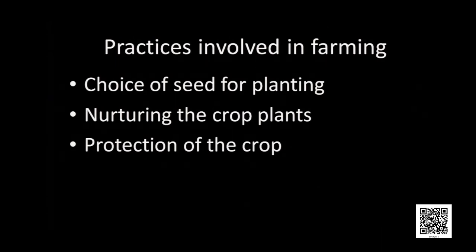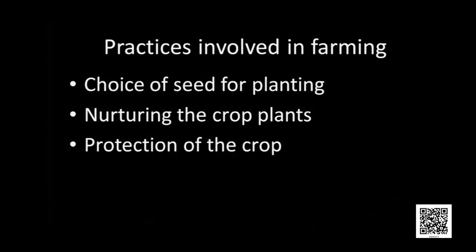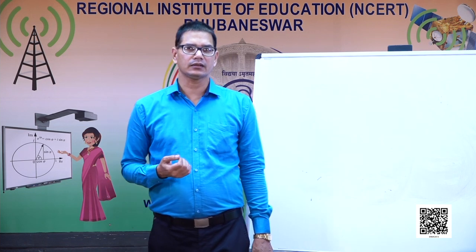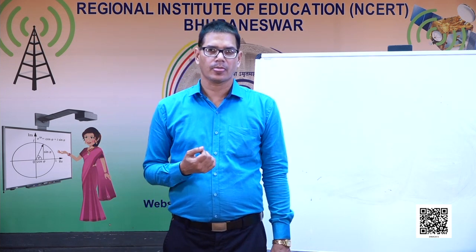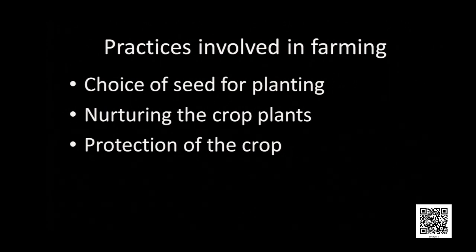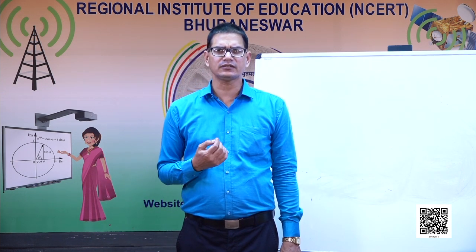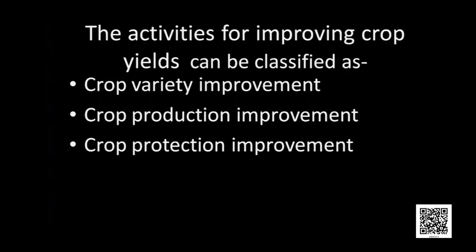Practices involved in farming: first, choice of seed for planting — we have to select seeds of good quality. Second, nurturing the crop plants — taking care from sowing to harvesting, including preparation of the field, irrigation, and using pesticides. Third, protection of the crop — we have to protect it from different parasites, bacteria, and fungi. The activities of improving crop yield can be classified as crop variety improvement, crop production improvement, and crop protection improvement.